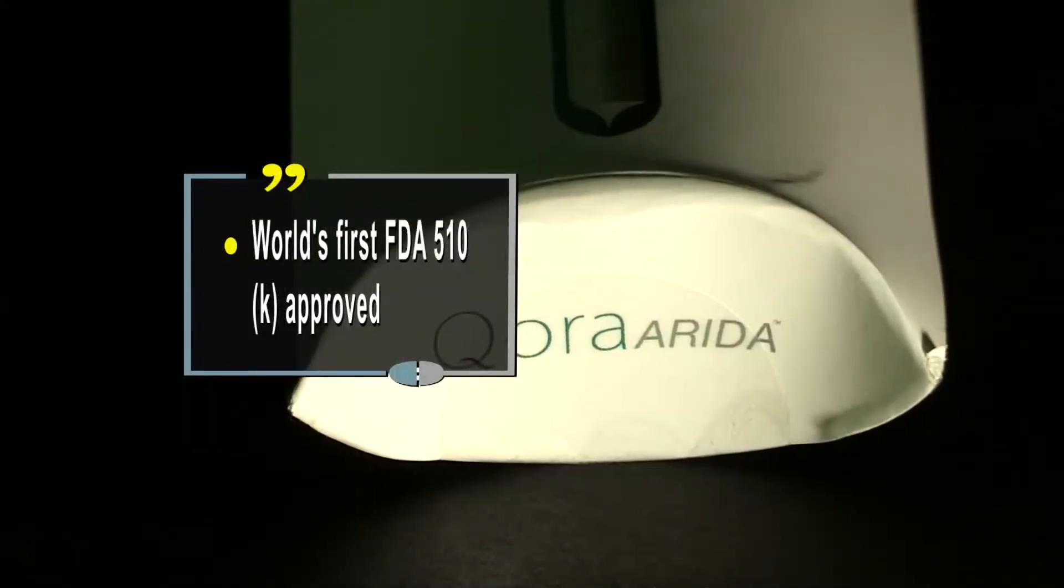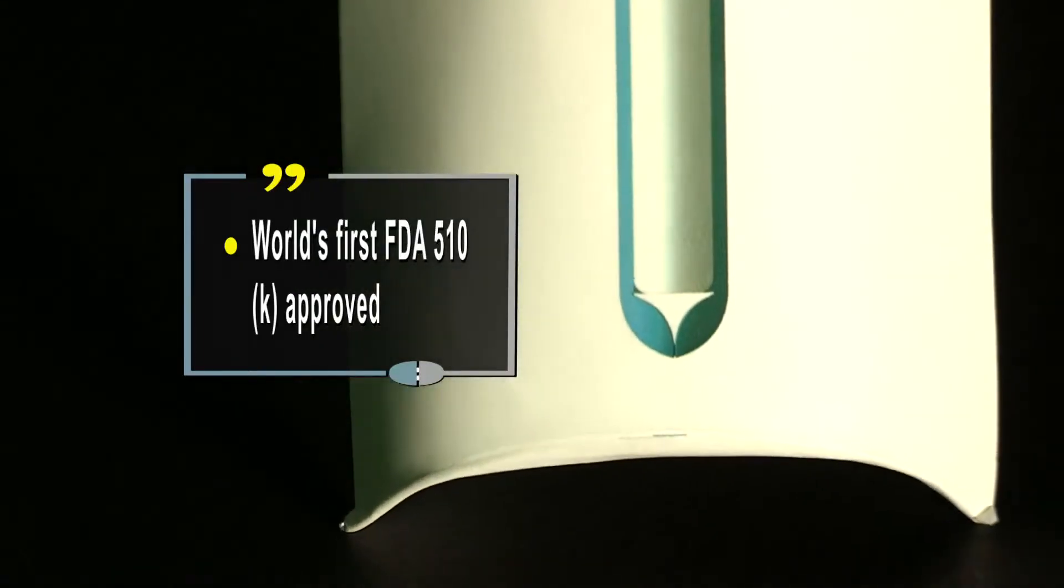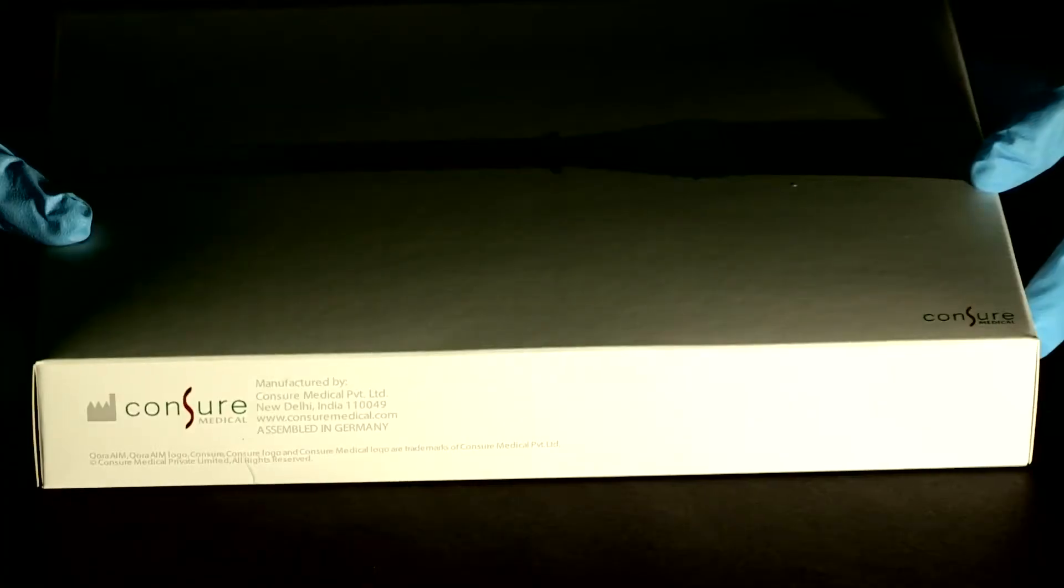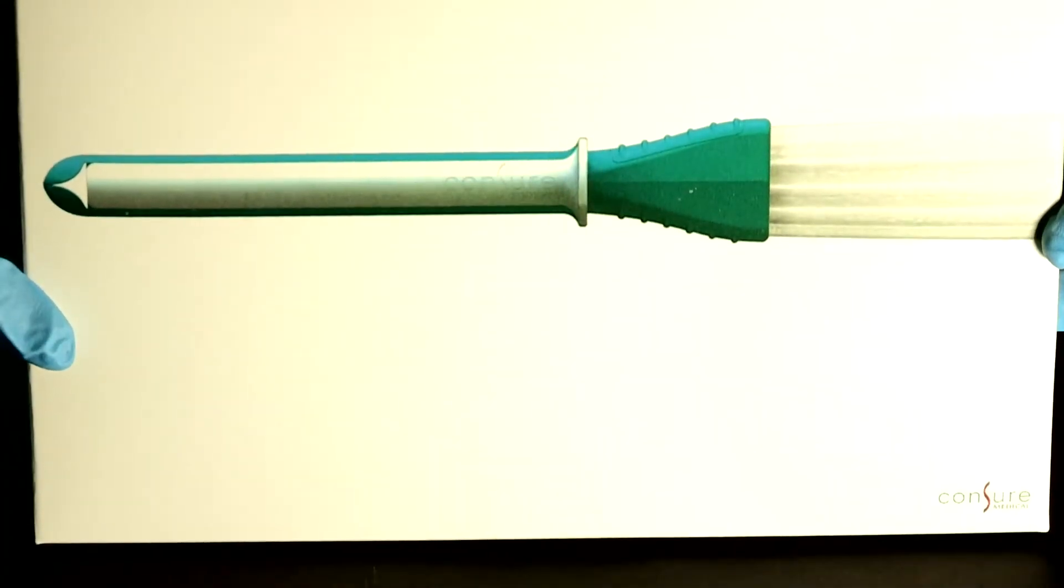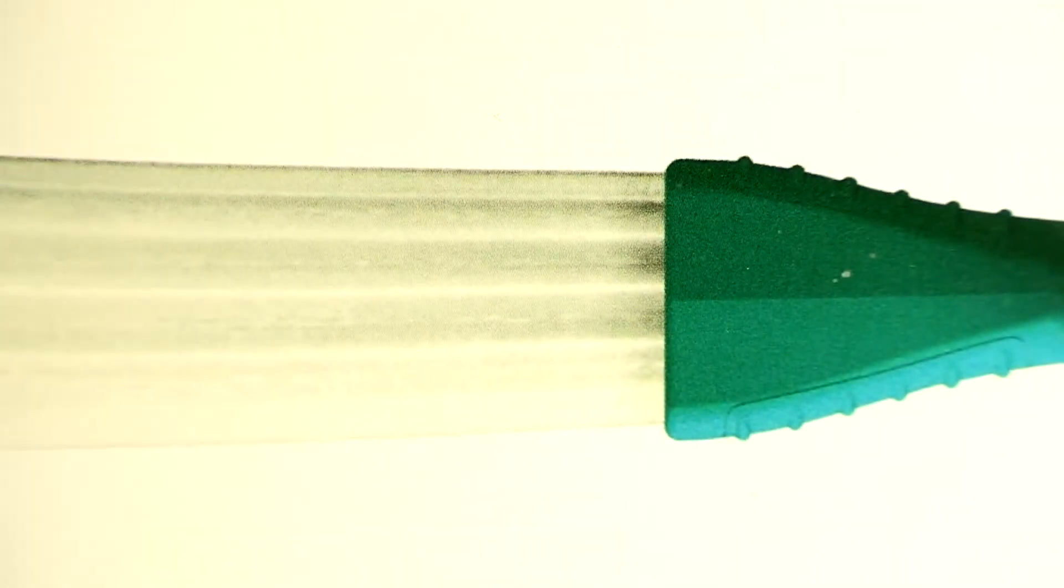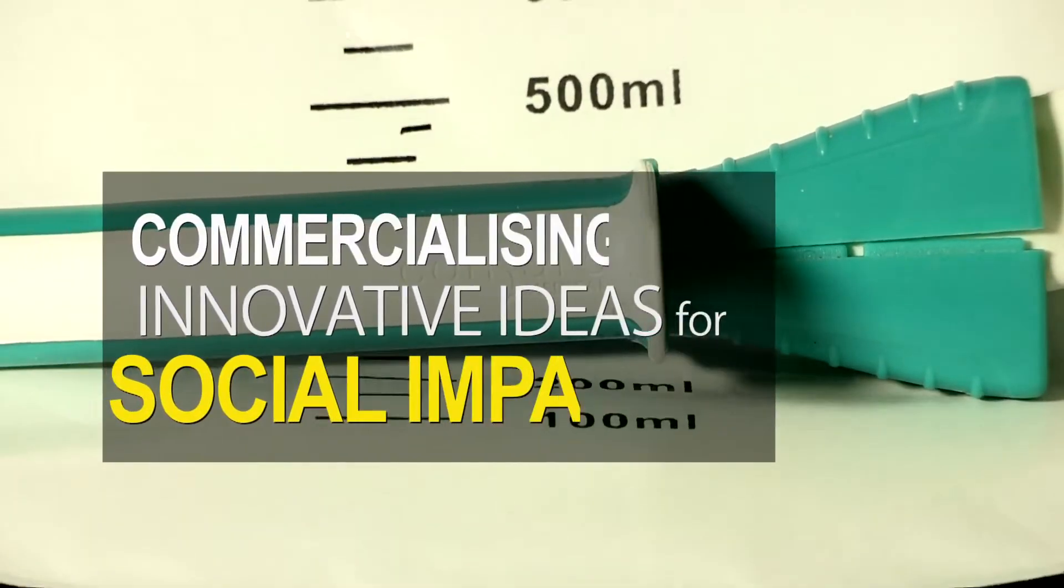This is the world's first FDA 510K approved indwelling fecal drainage device that was commercially launched in India and the US in 2016. The product has been tested in 50 hospitals in India and more than 35 hospitals in the United States. With patents in Australia, Canada, European Union, Israel, Japan and Singapore, the Cora Stool Management Kit aims to become the new standard of care in bowel management the world over.